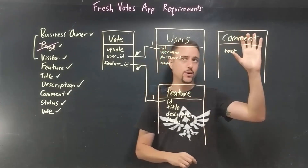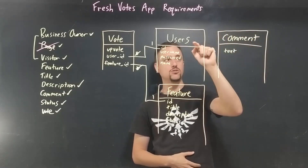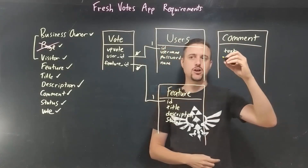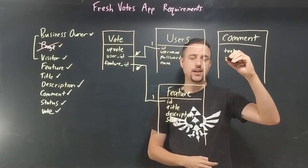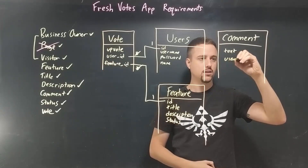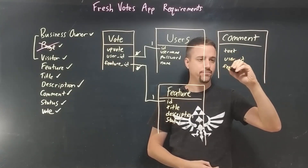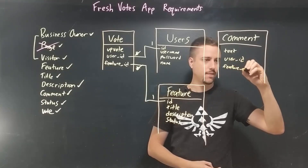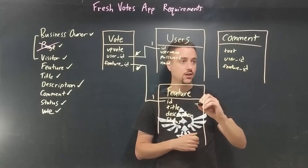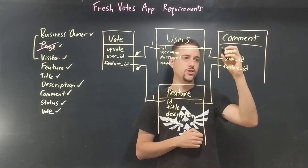What about the other way? Same kind of thing — a user leaves a comment on a feature. It's the exact same pattern, just flipped over here. So we have a user ID and a feature ID, and we have relationship information joining the two.